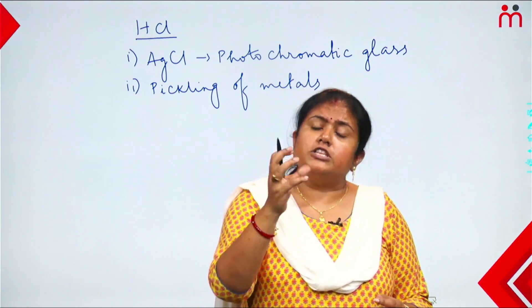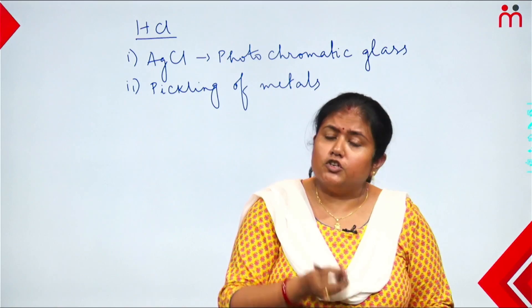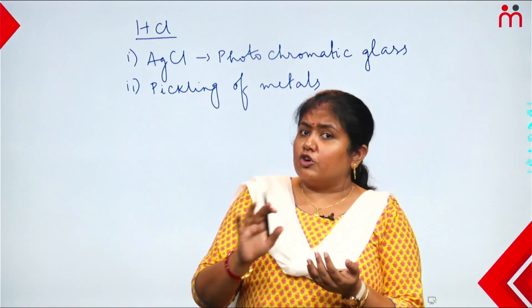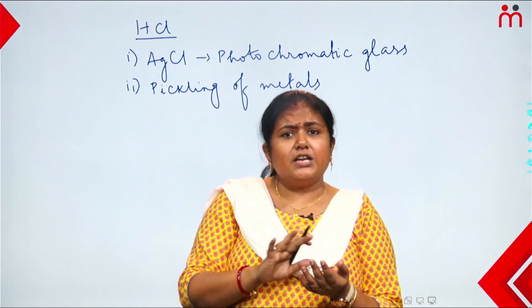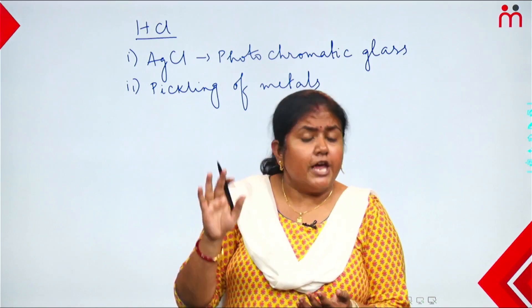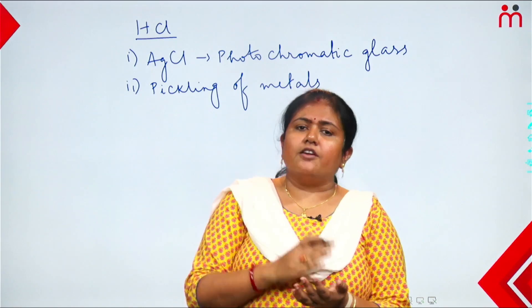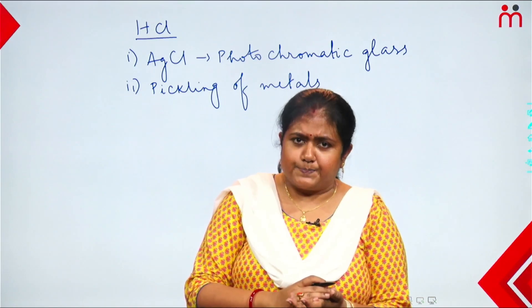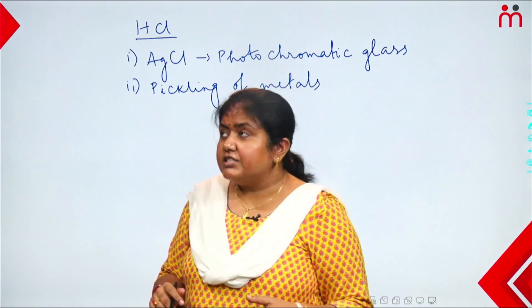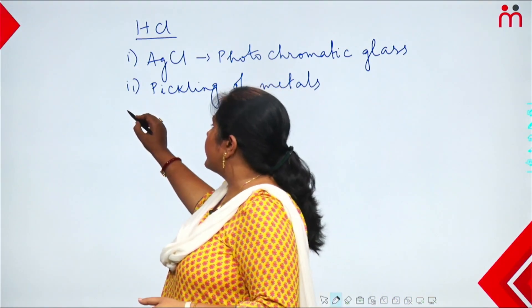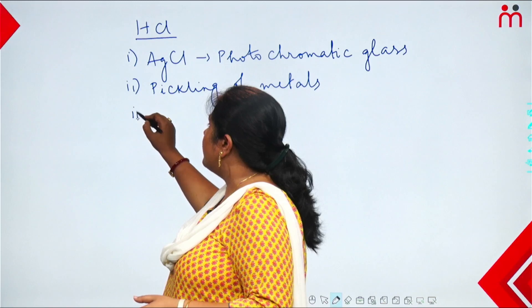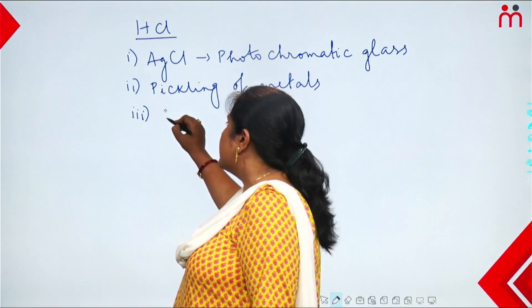Hydrochloric acid is also used in laboratories. Three types of people use it in labs: it is used to remove the green color (patina) from copper vessels. It can remove the green layer from copper surfaces. This is another use of hydrochloric acid.